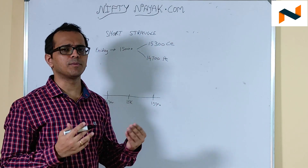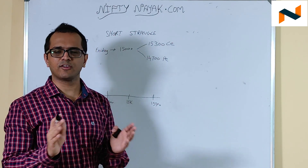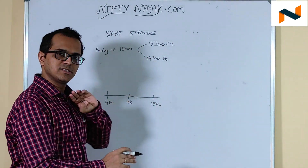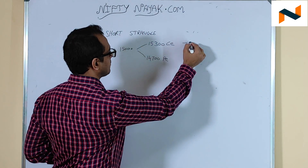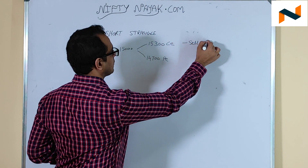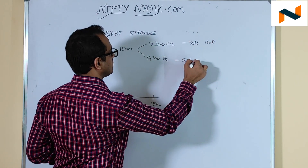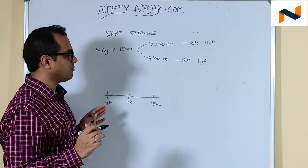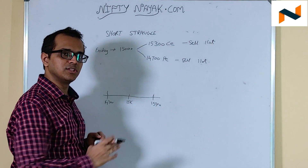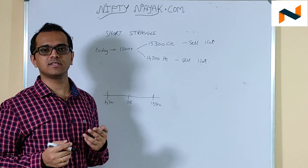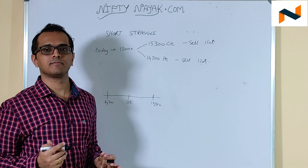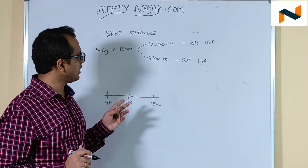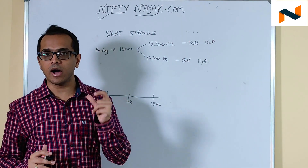That profit depends on what premium you have collected, what the VIX is and other factors. But you can blindly implement this — on Friday morning, identify the range and sell these options. This is nothing but a short strangle. Now, markets are volatile; you can't always expect markets to stay in this range. Nifty intraday moves can be more than 400 points nowadays, so there is a high chance you will have to do an adjustment. The adjustment we will be doing is called a martingale strategy.